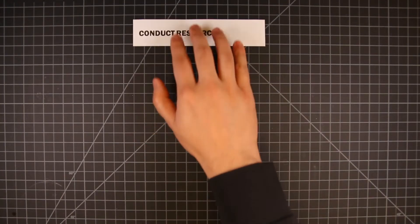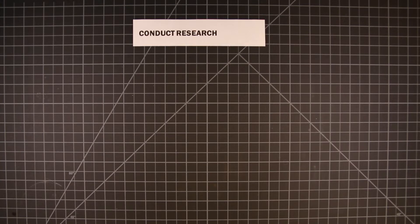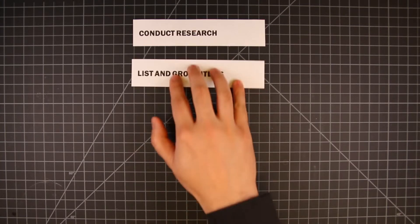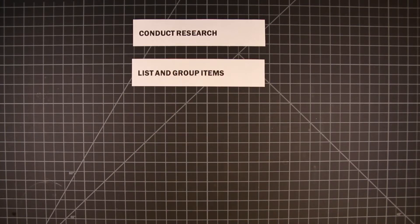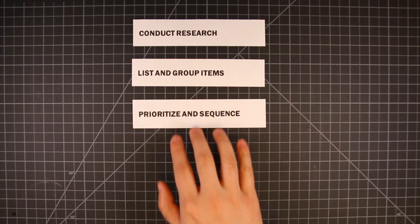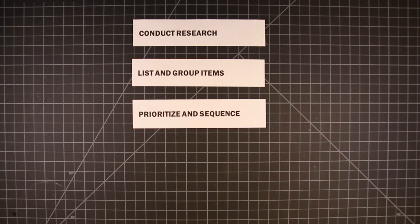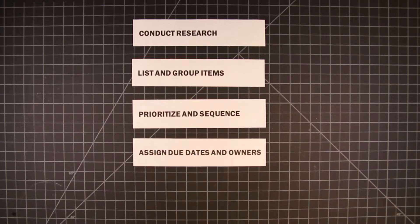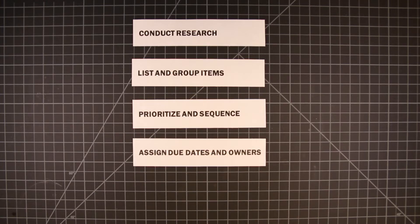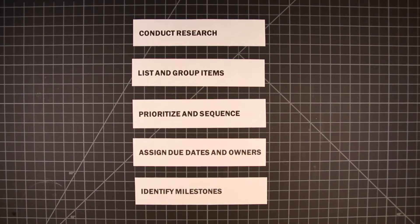So to recap, how do you build a plan? You start by researching what is already out there. Then you list out the items you want to do and group them into categories to help you organize. Next, prioritize and sequence those activities based on known constraints, dependencies, and your own logic. From there, assign due dates and owners when appropriate. And finally, identify key milestones.